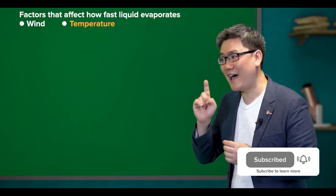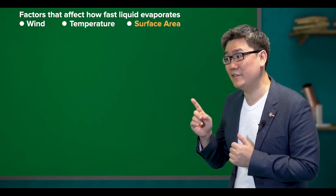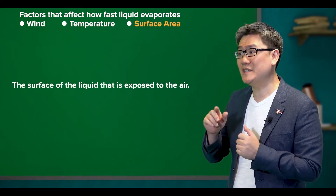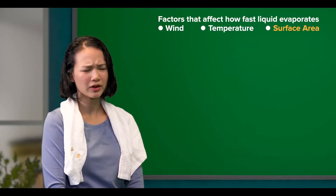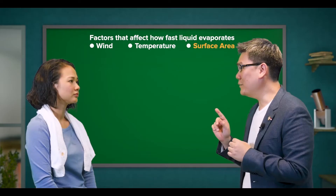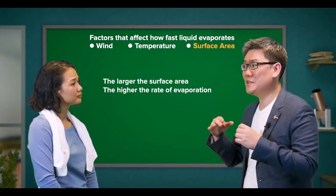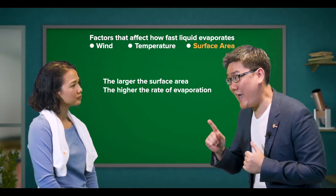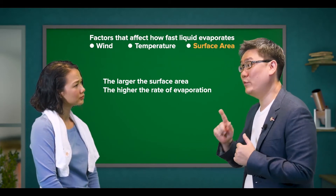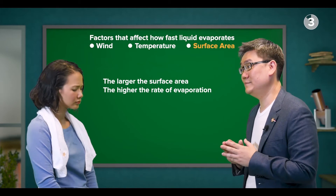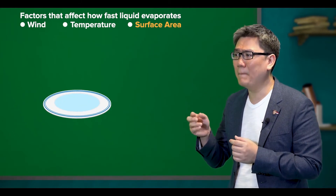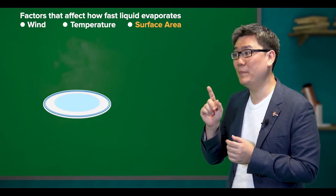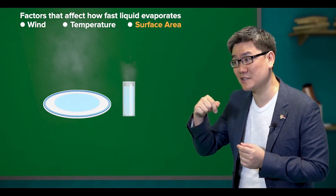Lastly, we also have the surface area of the liquid, which is the surface of the liquid that is exposed to the air. The more spread out the liquid, the larger the surface exposed to the air, and the higher the rate of evaporation. For example, water on a plate would dry up much faster as compared to the same amount of water in a glass.